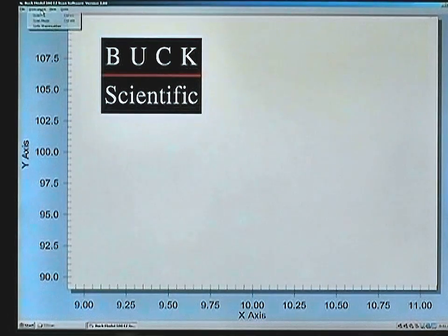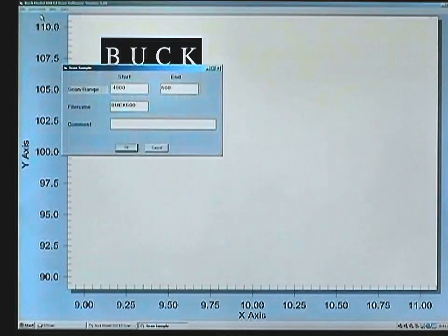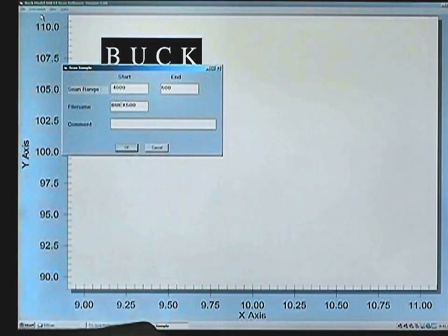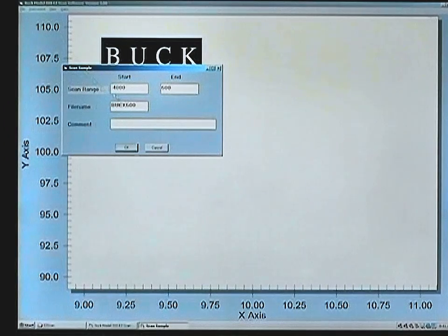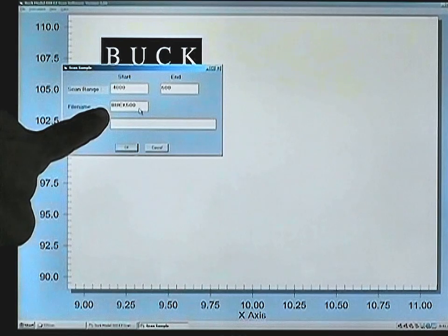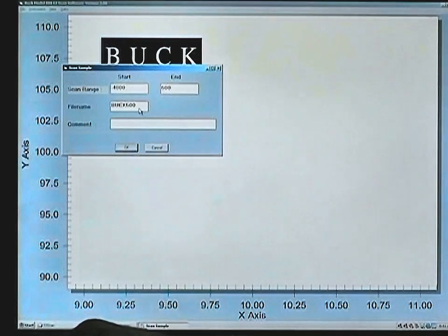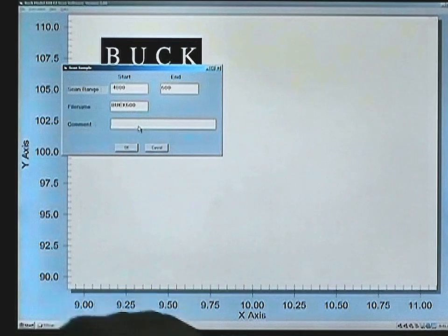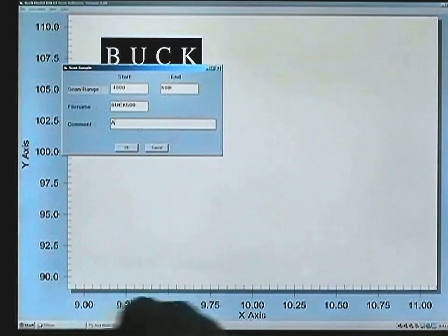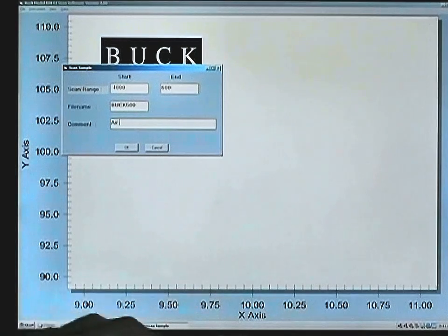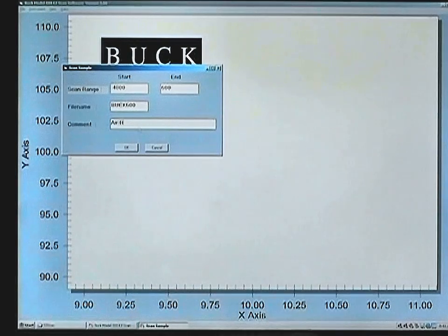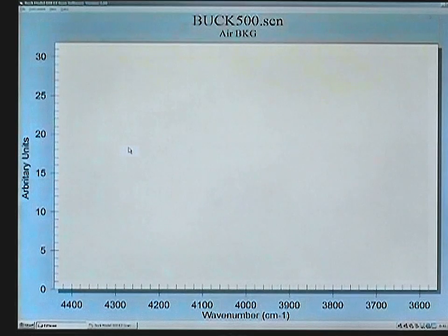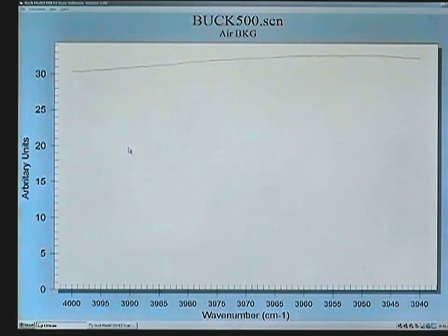We can now go to Instrument, Scan, and the software shows you the setup screen for the first scan. You can use the default file name of Buck 500 or change it to whatever 8-character file you want, and it is recommended to put a reference name in the comment screen. And here we are just calling this the Air Background. We click on OK.